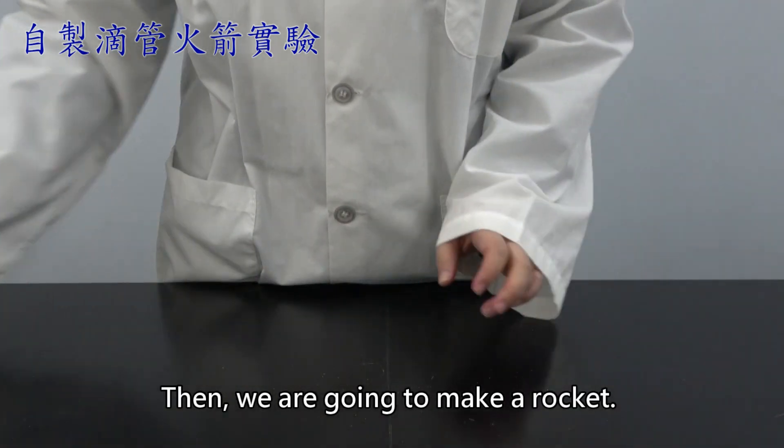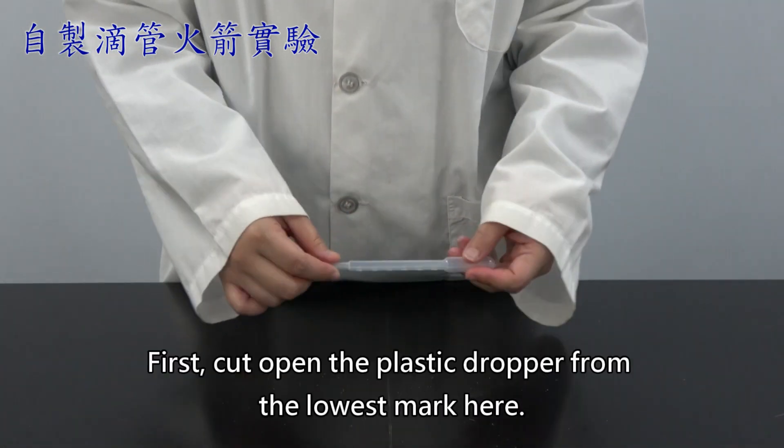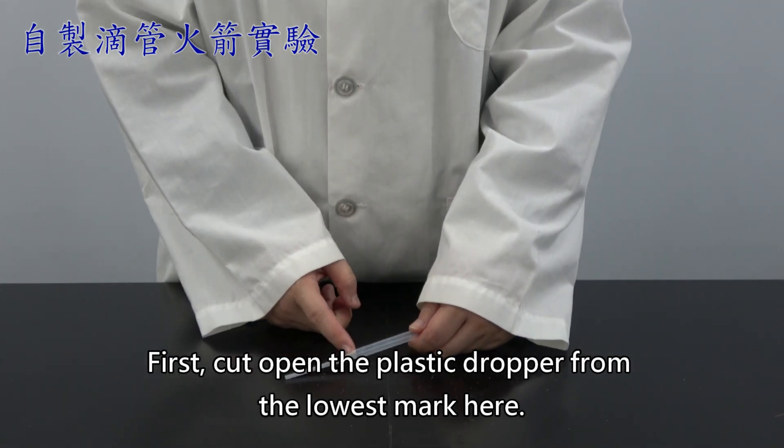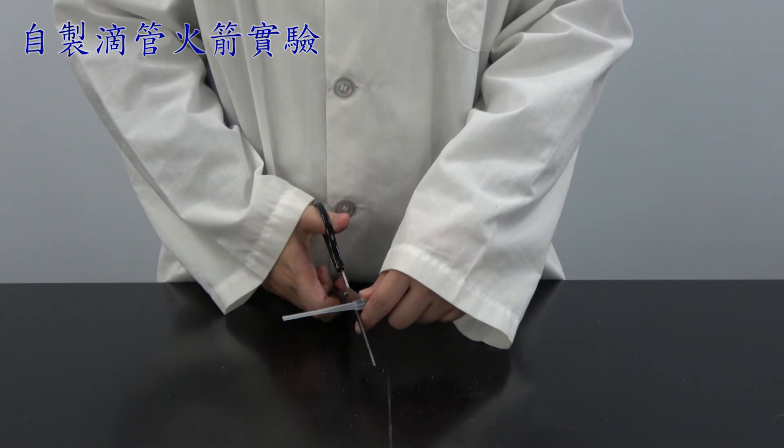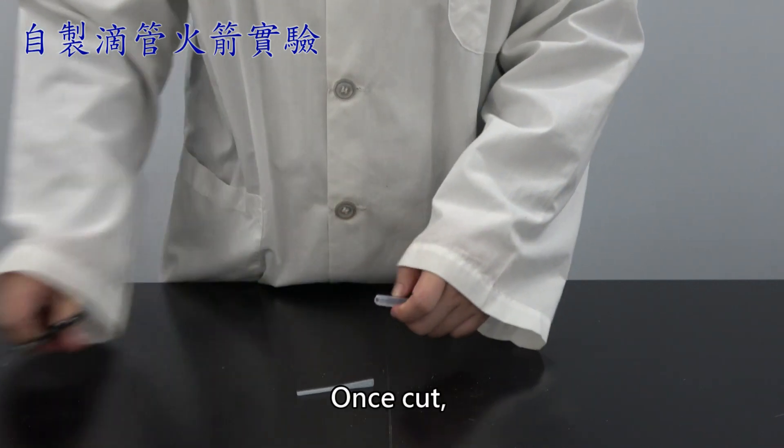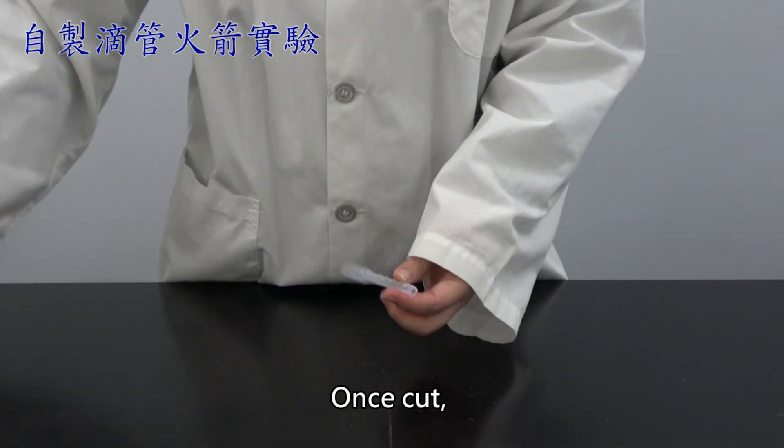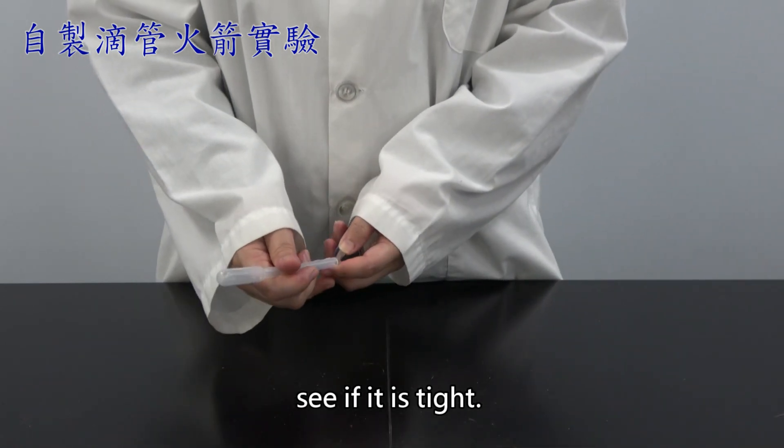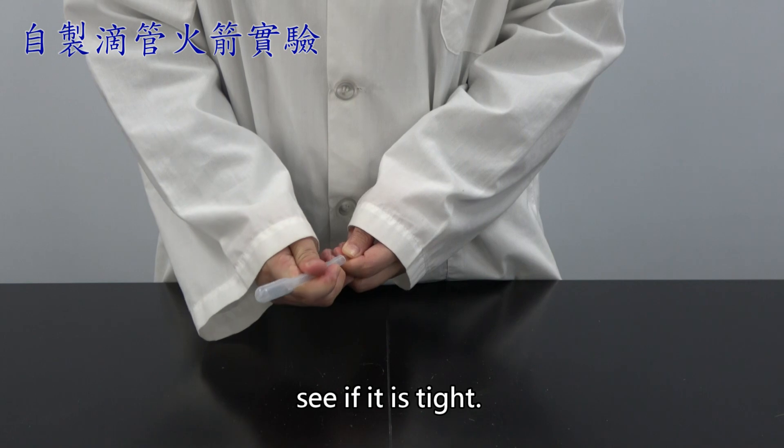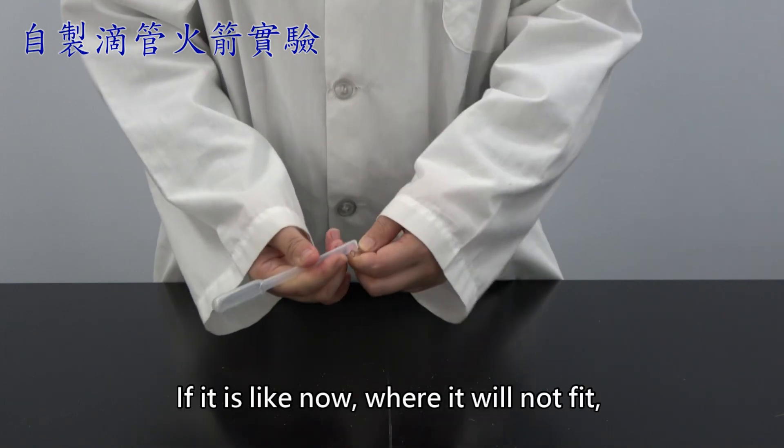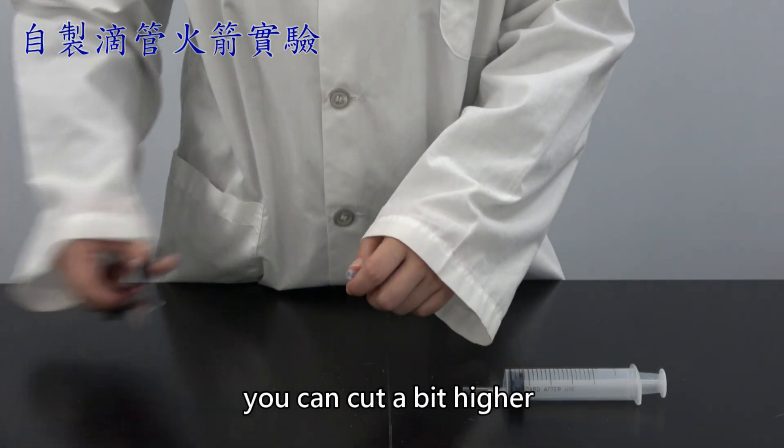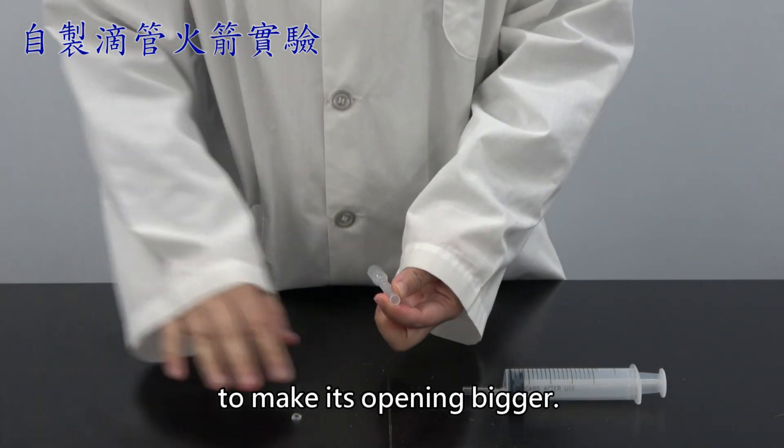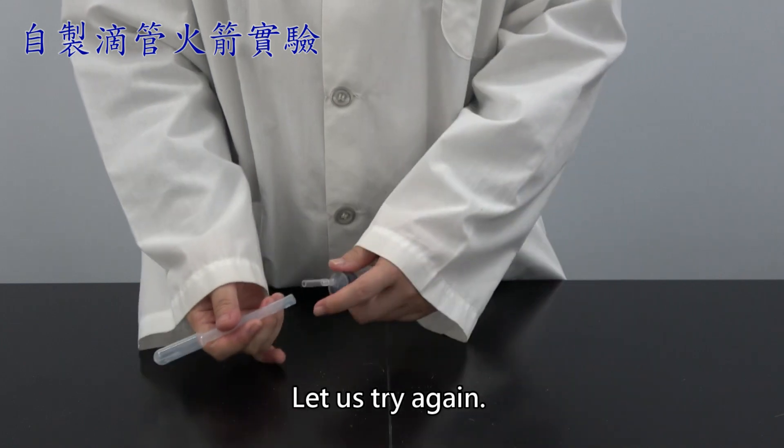Then, we are going to make a rocket. First, cut open the plastic dropper from the lowest mark here. Once cut, let us try and put it onto the plastic tube. See if it is tight. If it is like now where it will not fit, you can cut a bit higher to make its opening bigger. Let us try again.